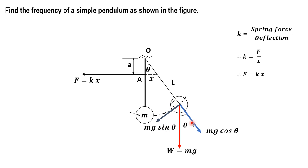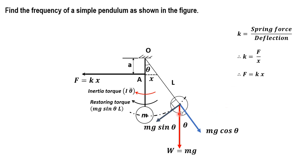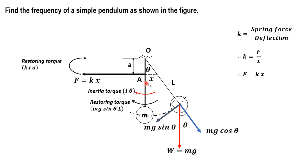Another restoring torque is provided by mg sinθ with perpendicular distance l, so it is mg sinθ into l. If this is the direction of motion, the inertia torque will act opposite to the direction of motion, that is iα or iθ̈. One restoring torque is provided by mg sinθ into l, and another by the spring force kx with perpendicular distance a, giving kx into a. The inertia torque is iα or iθ̈, where θ̈ is angular acceleration in radians per second squared.